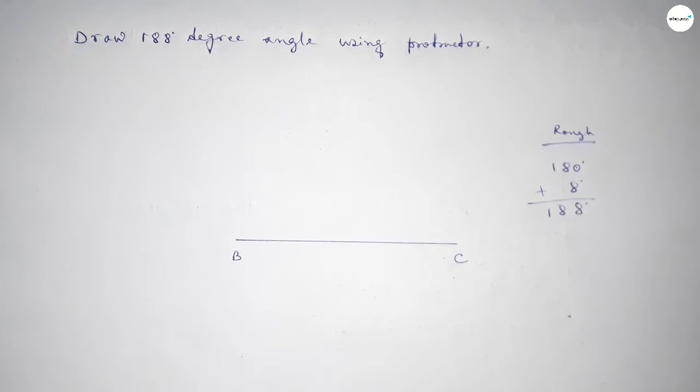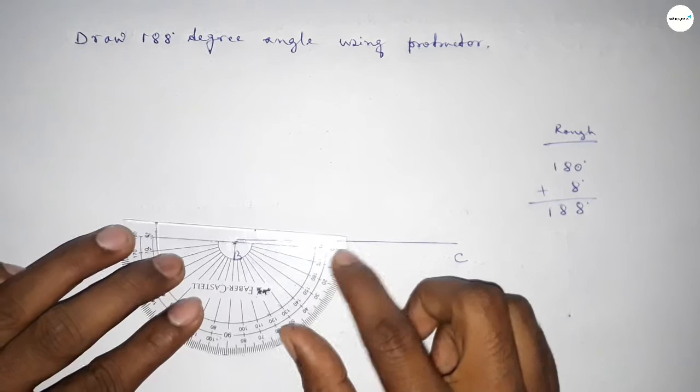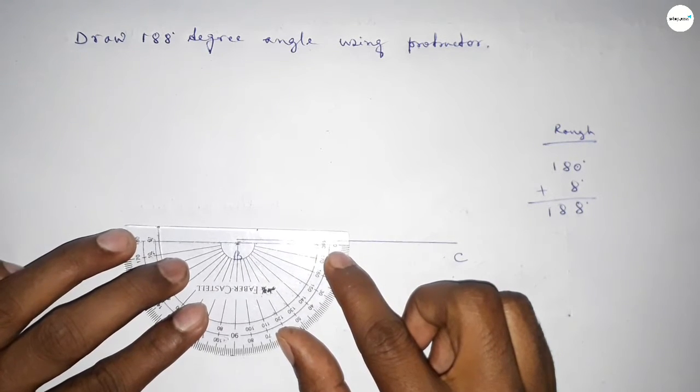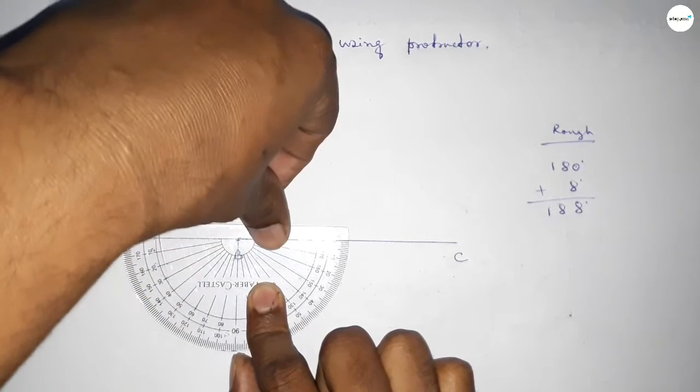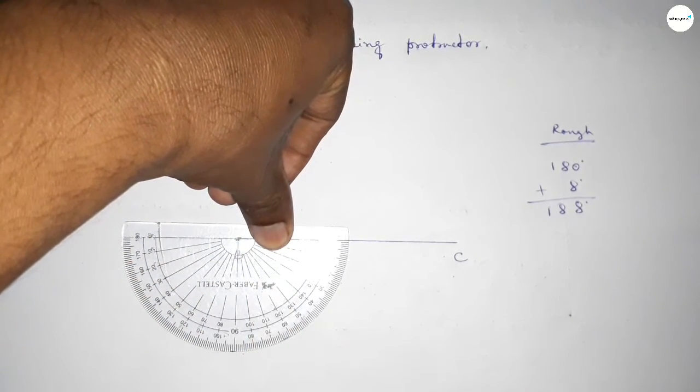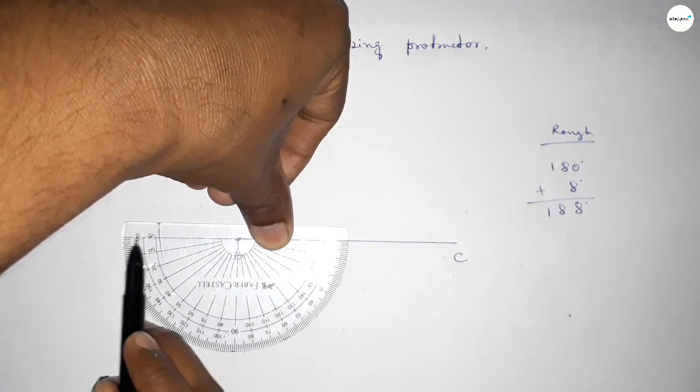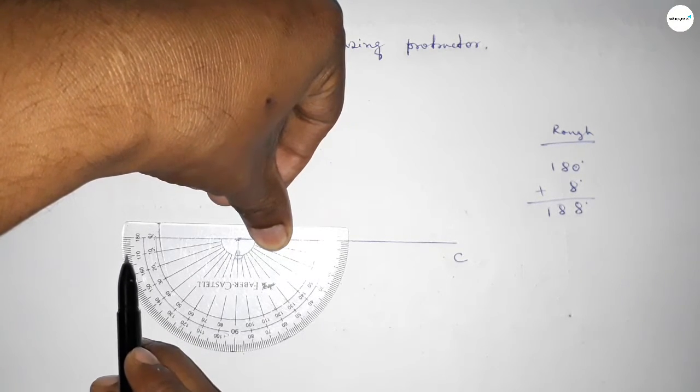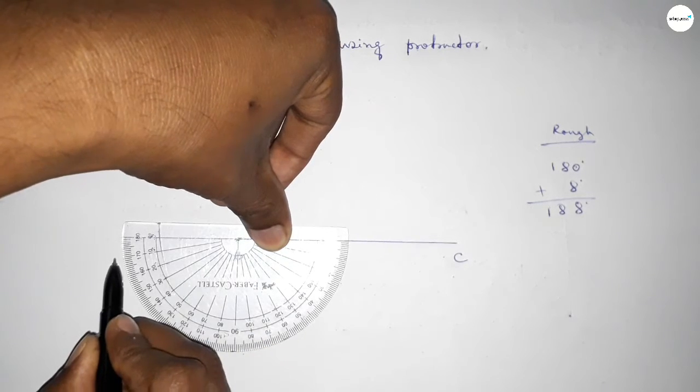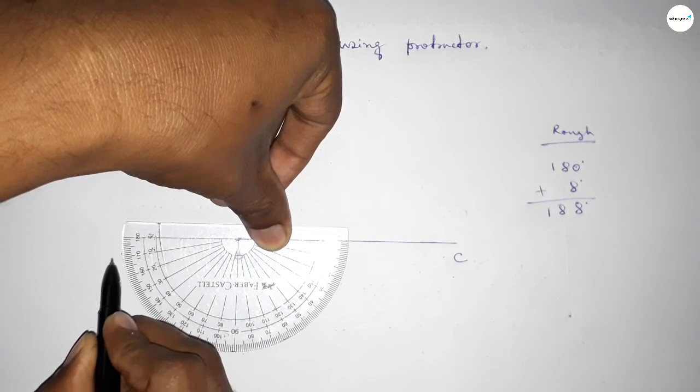Again putting the protractor on the point B perfectly. Then we have to count 8 degree angle. So this is 180 degree and 1, 2, 3, 4, 5, 6, 7, 8. So this is 8 degree.